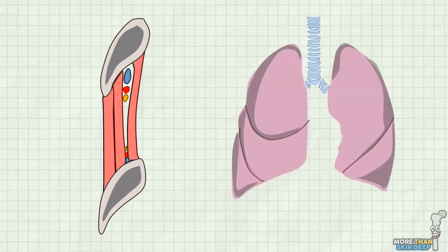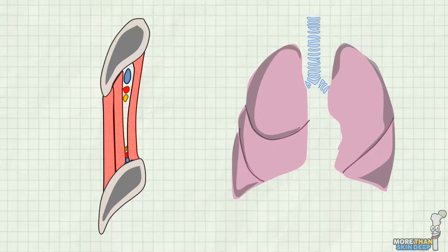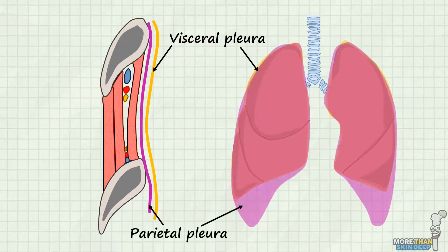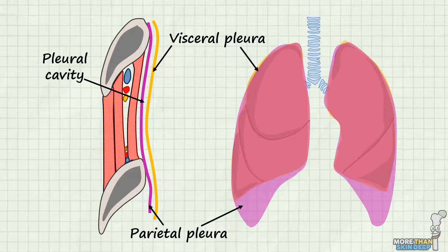The last two layers we should be aware of before we reach the lungs are the pleura. These are two layers of thin, moist connective tissue that runs over the inside of the chest wall and over the surface of the lungs. The layer running directly in contact with the lungs is known as the visceral pleura, whilst the layer in contact with the chest wall is the parietal pleura. There's a potential space between the visceral and parietal pleura known as the pleural cavity. In healthy people, this contains 10 to 20 millilitres of pleural fluid, which acts to adhere the two layers together and lubricate them during movements of the lungs. Anything other than this small amount of fluid in the pleural cavity is pathological and is caused by an underlying issue.